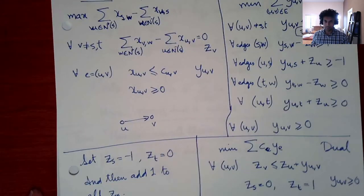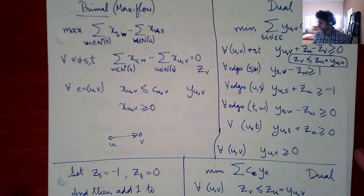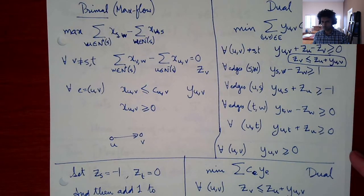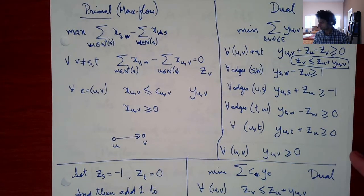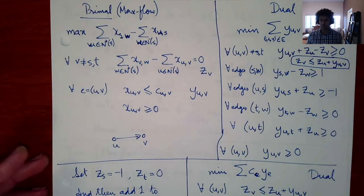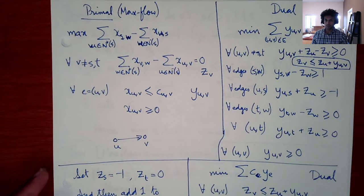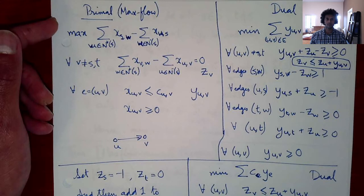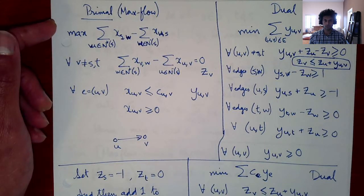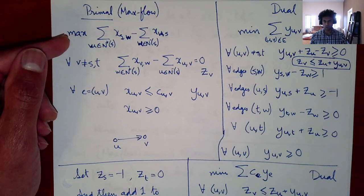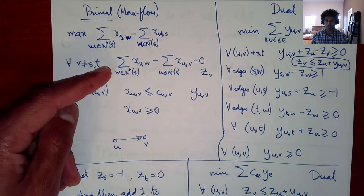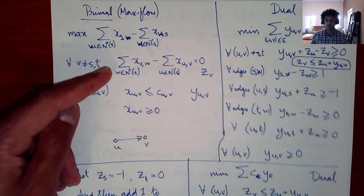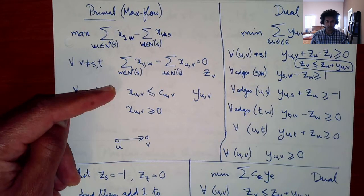Recall that the primal LP for max flow does a maximization over the flow going out of s, with flow conservation constraints and capacity constraints.